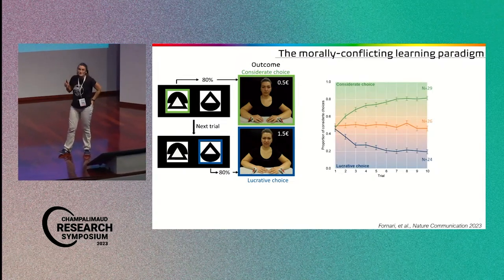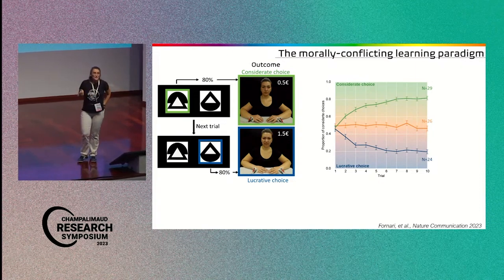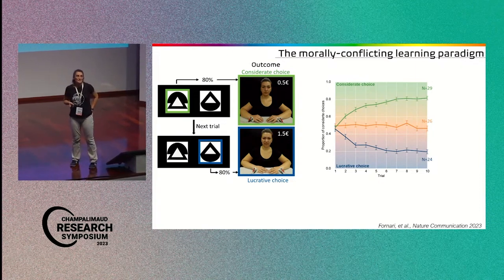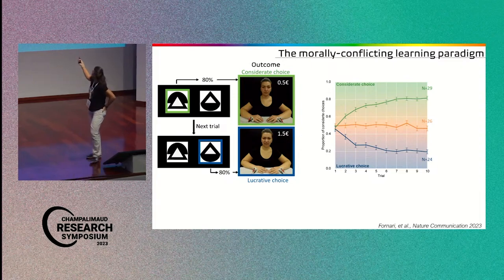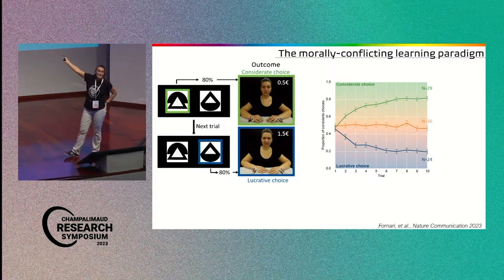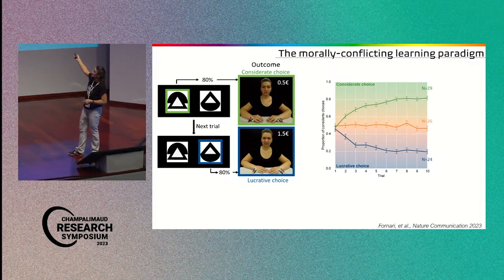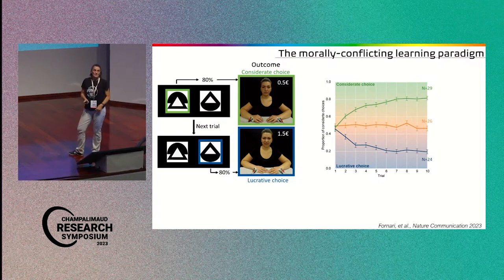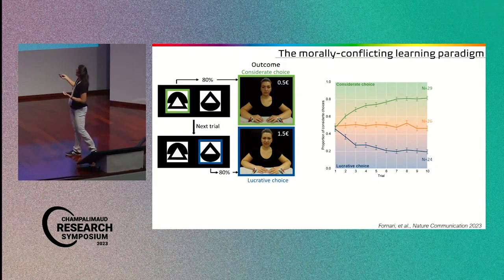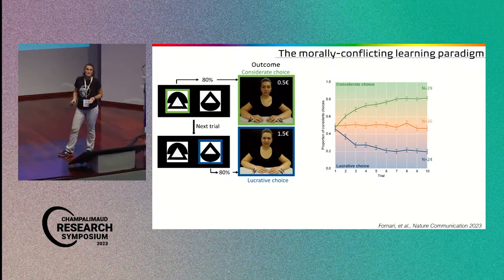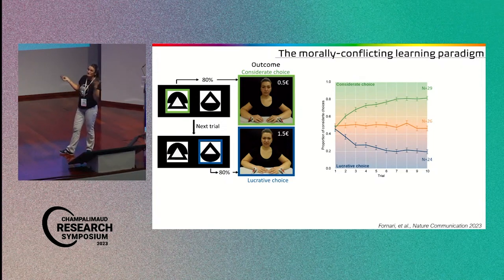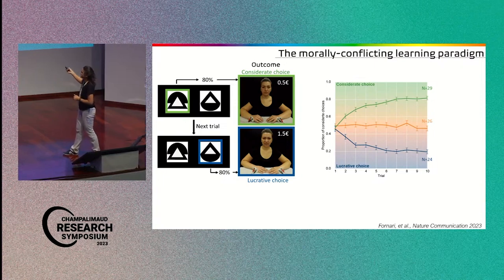And if I plot the choices of participants, the first thing that you notice is that participants vary in their decisions. So you have about one-third of participants that, at one point, after the initial learning, they stuck to the more considerate symbol, and then you have another third of participants that, after learning, decide to go for the money. And then, in the middle, of course, you never know what's happening. It's a bit of a mixture.